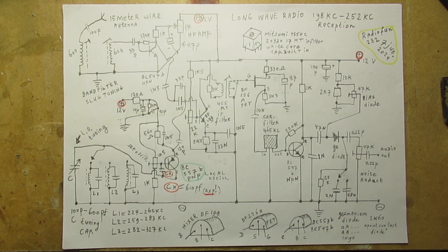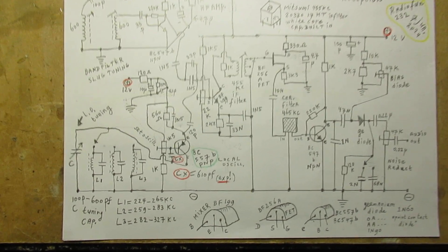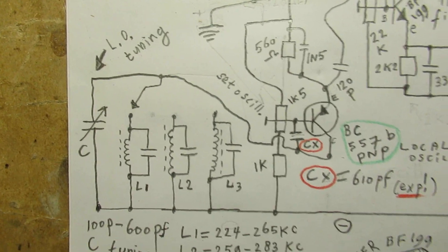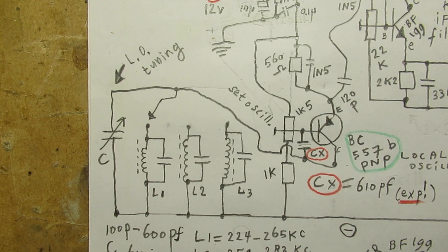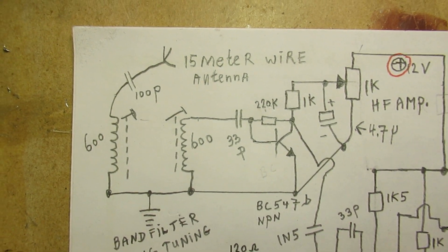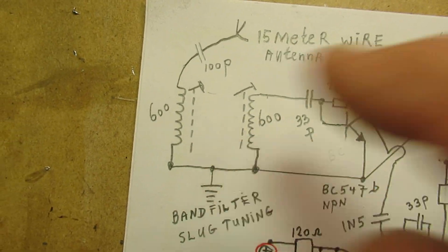When you are a little bit acquainted with radio tech, you can surely see all the functional units. Here is the local oscillator, built around the BC557B. This is the first stage, the front end, and here is that band filter. It's here.